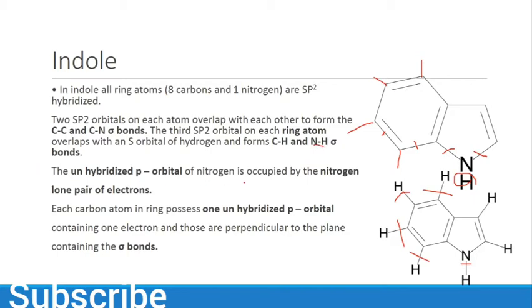The unhybridized p orbital of nitrogen is occupied by the nitrogen lone pair. Each carbon atom in the ring possesses one unhybridized p orbital containing one electron, and these are perpendicular to the plane containing the sigma bonds.